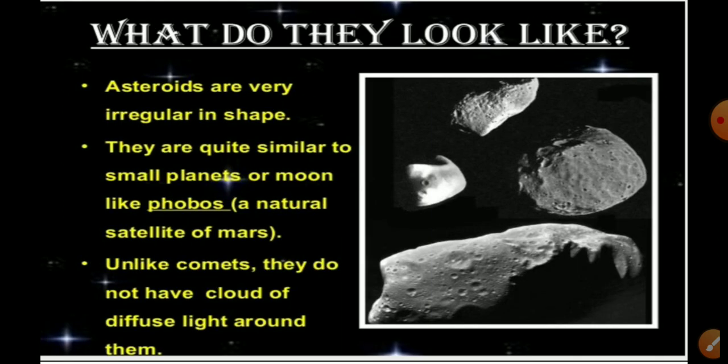Asteroids are very irregular in shape. They are quite similar to small planets. These are small objects revolving around the sun, and unlike comets, they are not luminous.